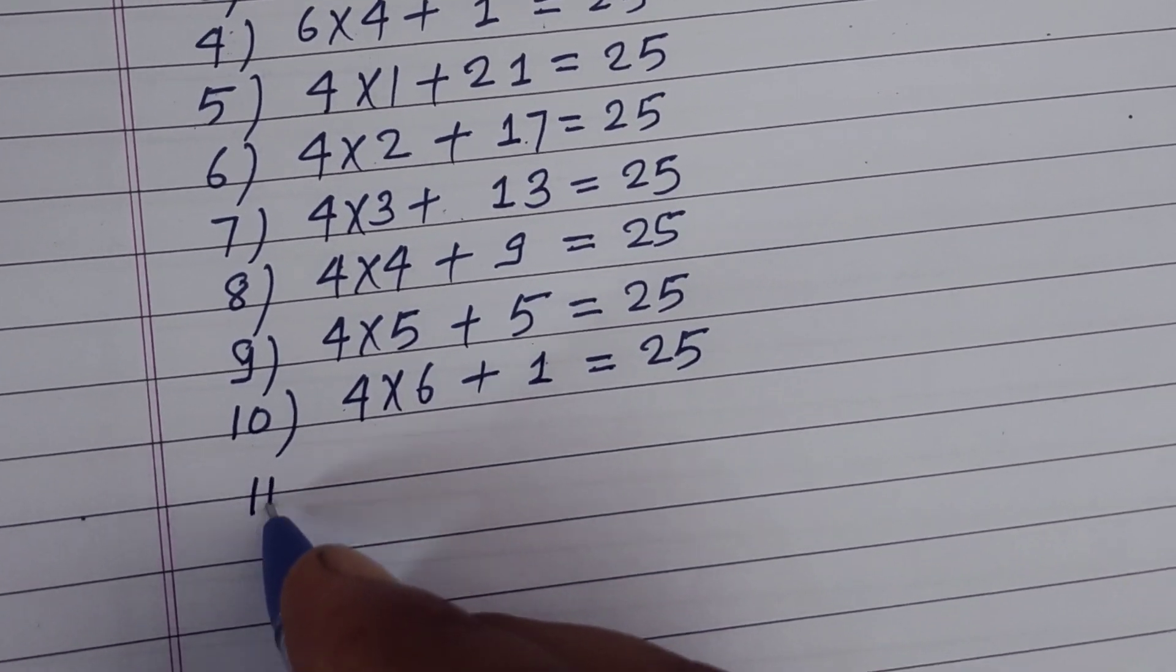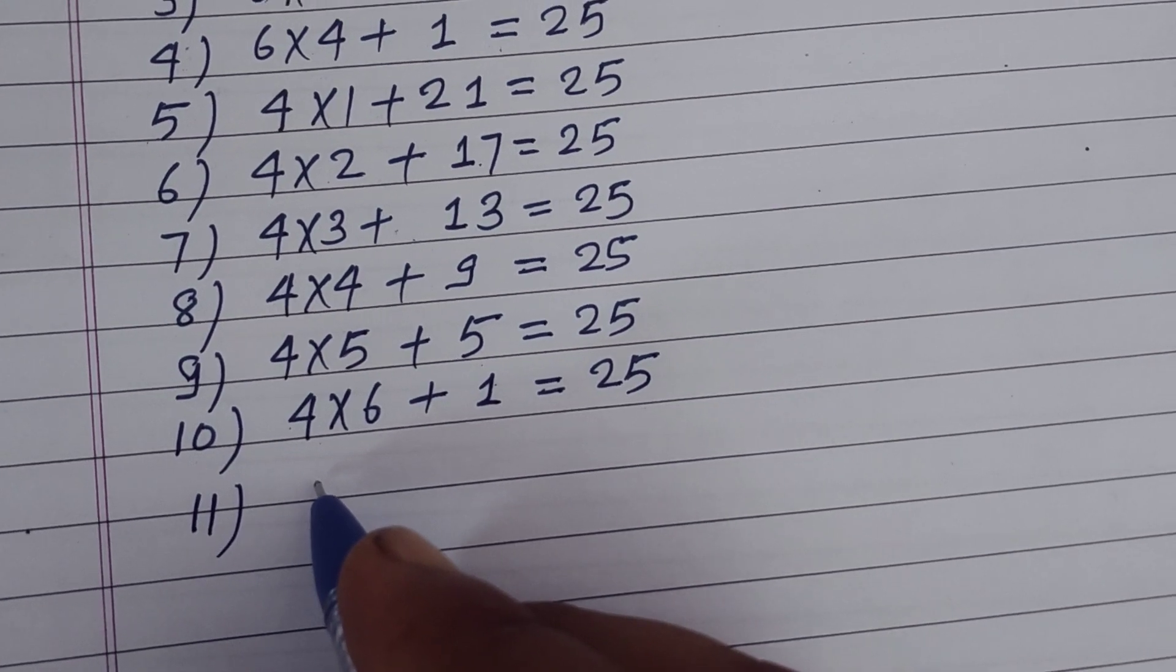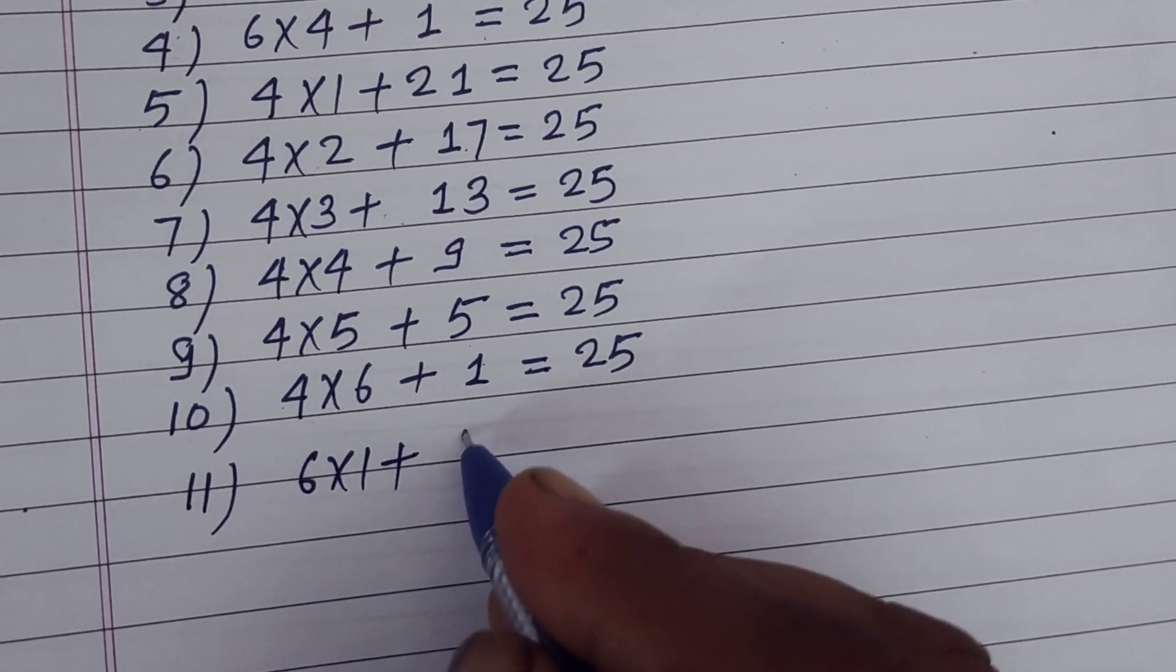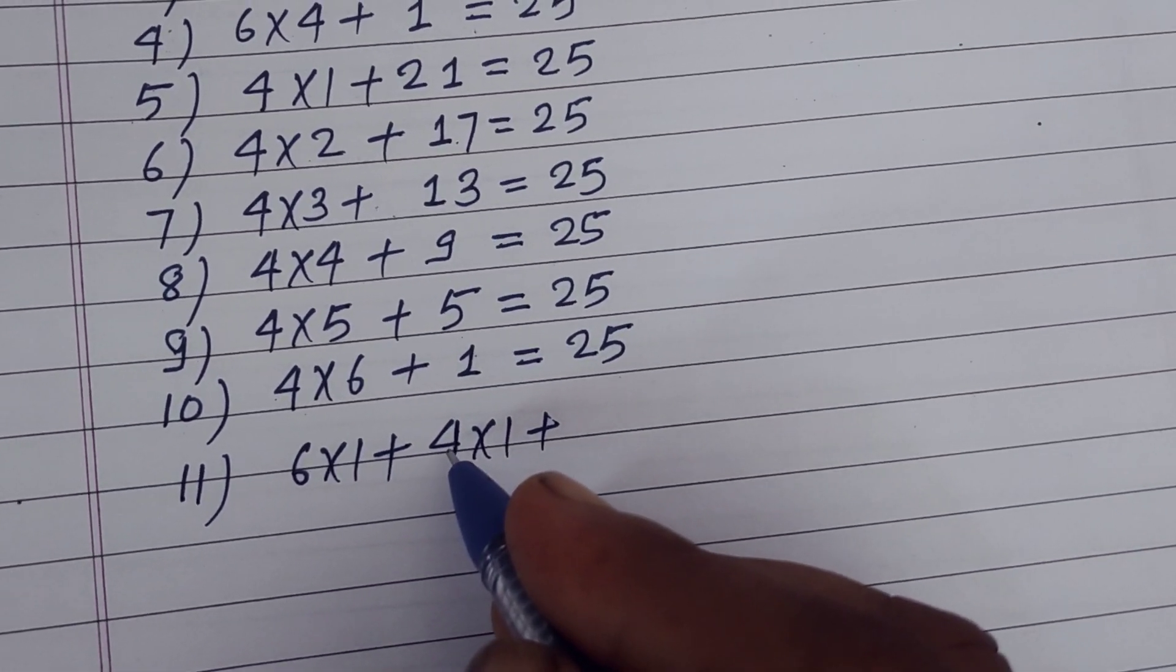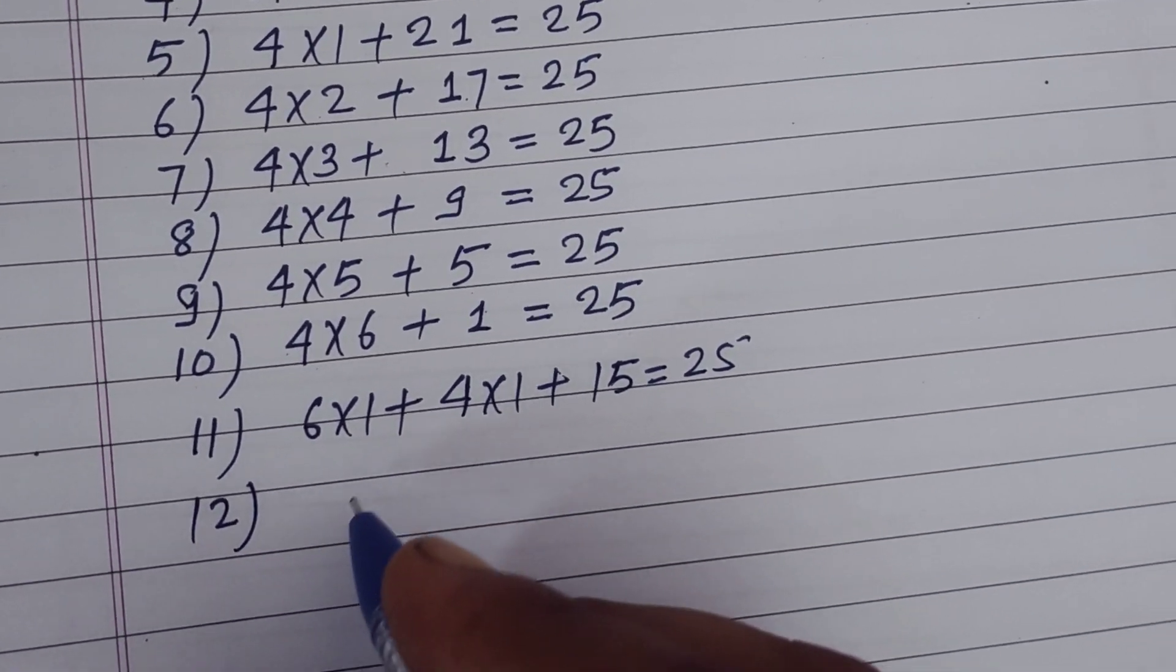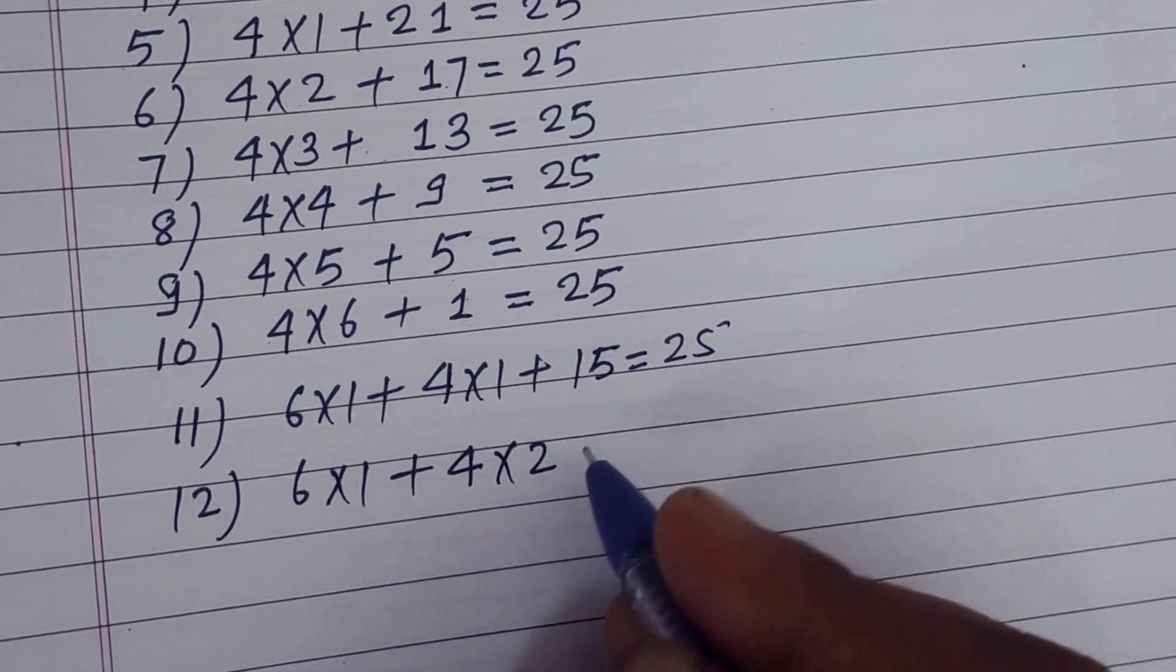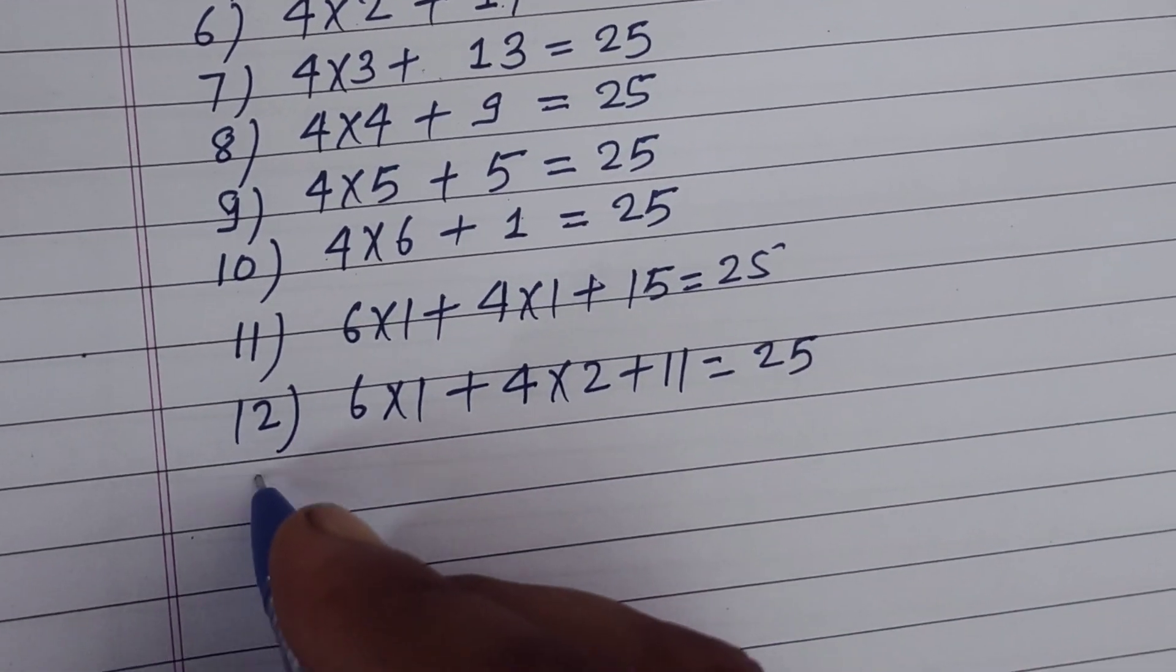Now we go the combination of 6s and 4s or 1. So 6 into 1, 1 six, 1 four. So 6×1 just 6 and 4×10 plus 15 ones, this is also 25. Twelfth is 6×1, 4×2 plus 11 single, also 25.